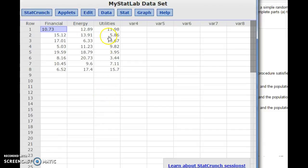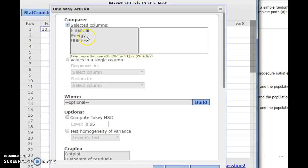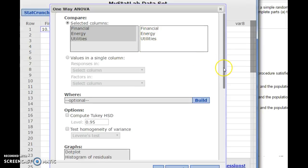So get the data loaded into StatCrunch. Then you want to go to Stat, ANOVA, Analysis of Variance, and One Way. Then select all the columns that you're trying to compare if all those means are the same.